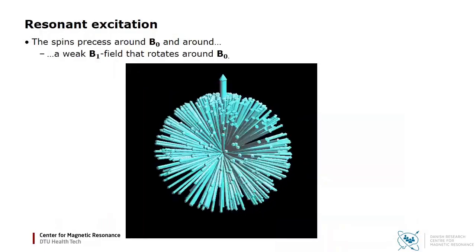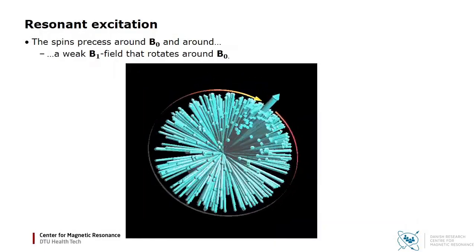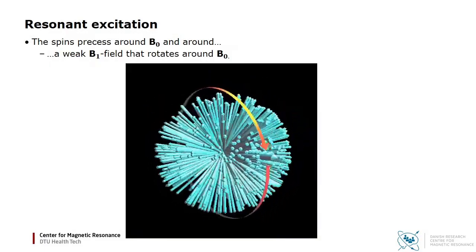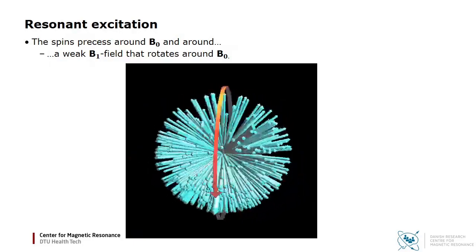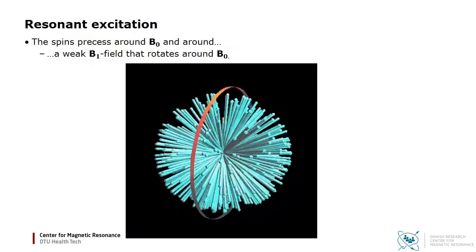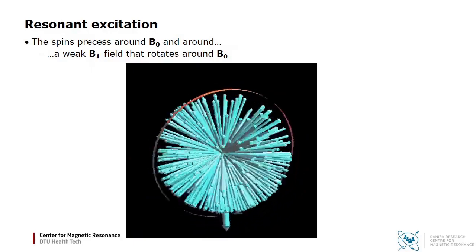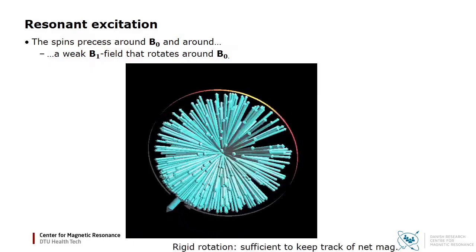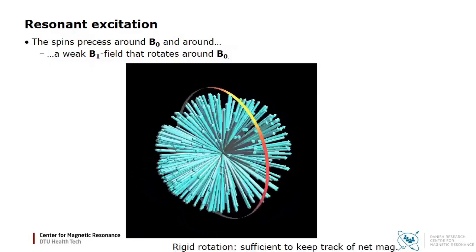When an oscillating RF field is added, the situation becomes more complex. Here it is shown how the magnetization precesses around B0, and simultaneously around an orthogonal B1 field vector that is itself rotating at the Larmor frequency. The reddish arrow shows the precession around B1. It is seen how the entire spin distribution is rotated, so the net magnetization follows. It can be rotated in any direction, for example into the transversal plane or back near equilibrium.